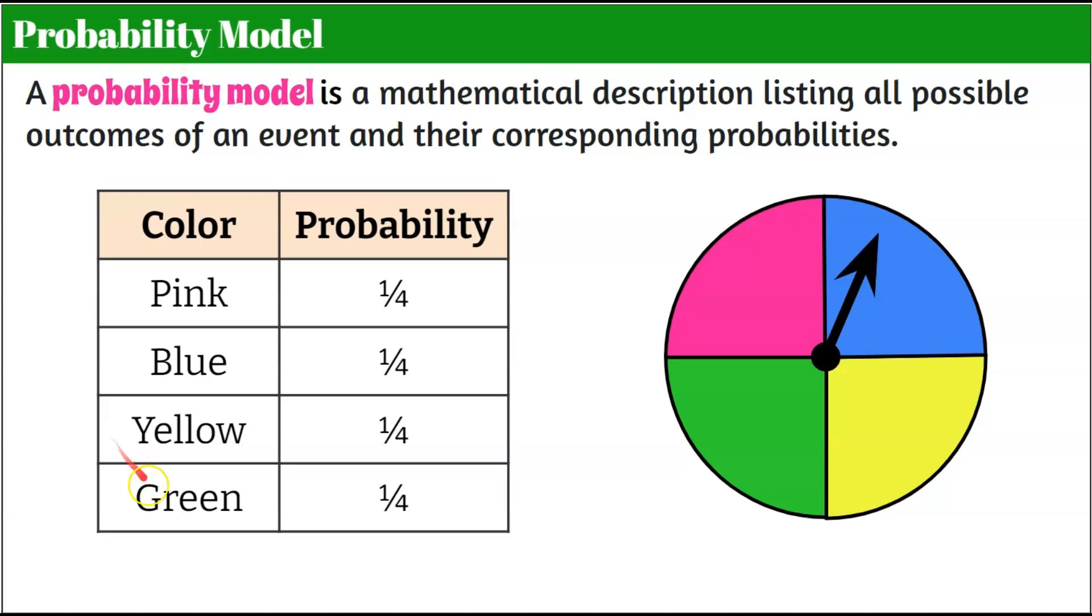So you could make a probability model in this table like this using probability written as a fraction. You could also do it where your probability was written as a decimal or you could do it as a percent. The typical way I like to do it is by decimal because it's easiest to compare the different probable outcomes as a decimal.